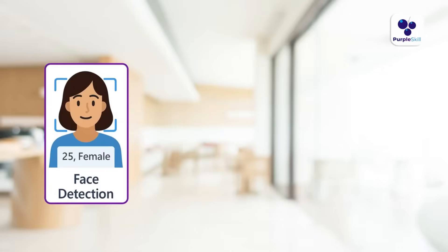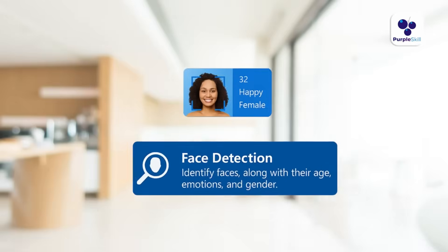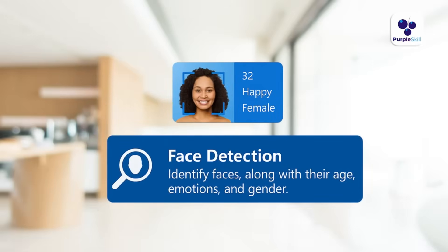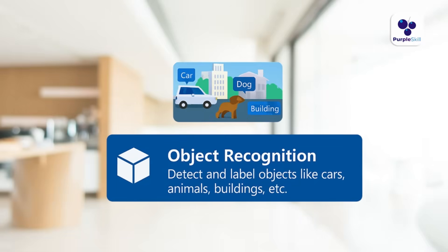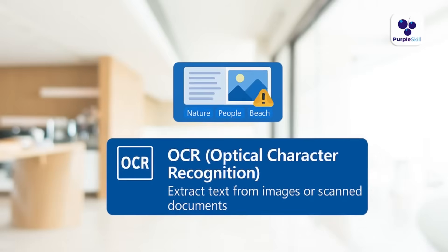Azure's Vision API allows our application to see and understand visual data the way humans do. We have various services under Vision Services: Face Detection Services, Object Analysis Services, OCR Services, and Image Analysis. Face Detection Services identify faces in images along with their age, emotions, and gender. Object characterization detects and labels objects like cars, animals, buildings, etc. OCR, known as Optical Character Recognition, extracts text from images or scanned documents.